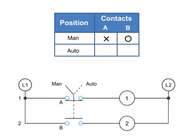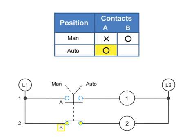When the switch position is set to AUTO, A is O, or open, and B is X, or closed.